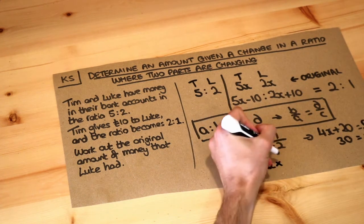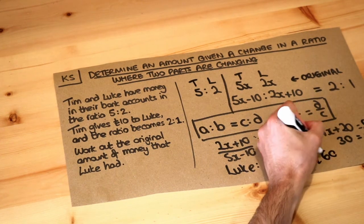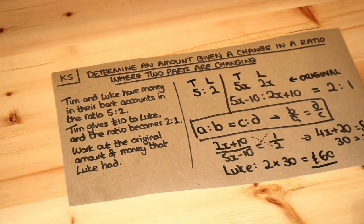So if we do 2x, 2 times 30 because x was 30, is 60 pounds. And that is the final answer.